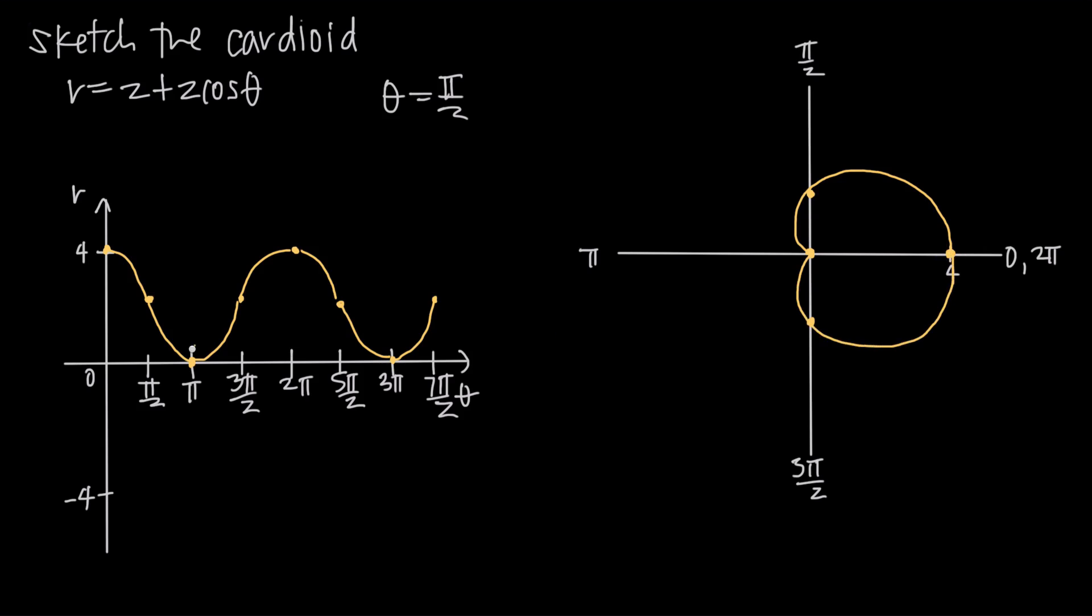And if we continued to follow this curve, what we would notice is that we get back to this point positive 4 right here, and then we just continue to follow the same pattern around the curve this way.